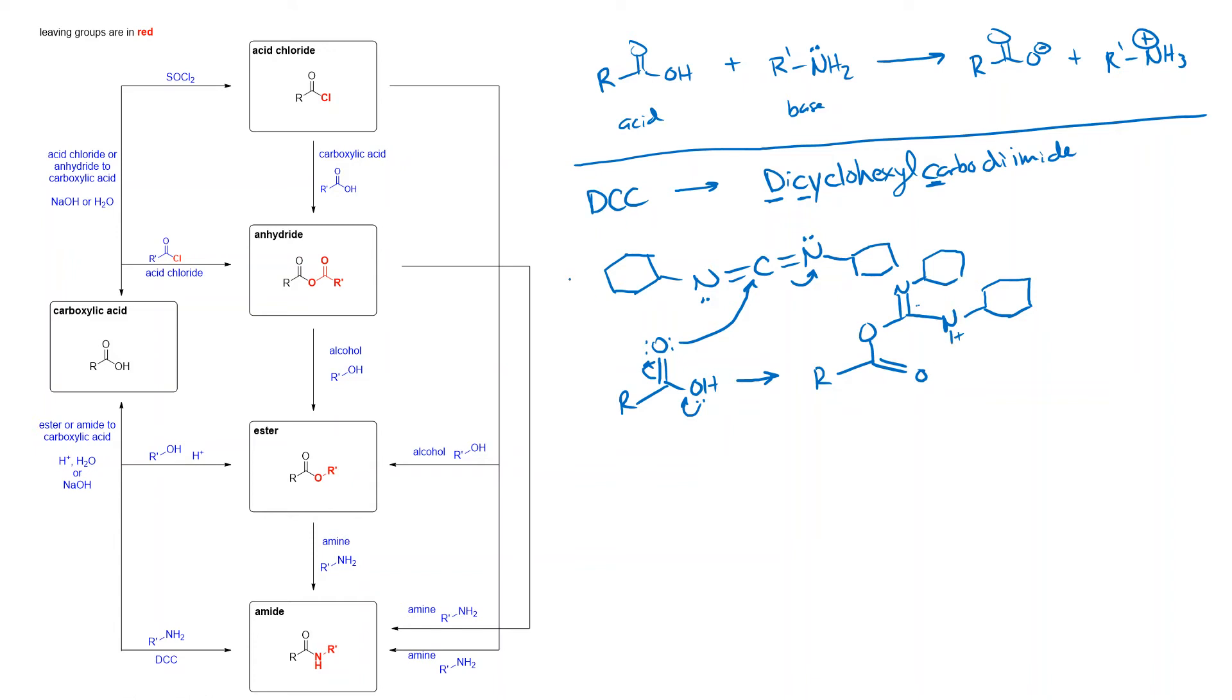And of course, what we've done again is we've made a good leaving group. So this whole compound up here is once again a good leaving group. And notice that we no longer have any acidic hydrogens. And so now if we react the DCC with the carbonyl and then bring our carboxylic acid and then bring in our amine, we have no problems. This nitrogen can add here. We can break the carbon oxygen pi bond and push the electrons up onto the oxygen.